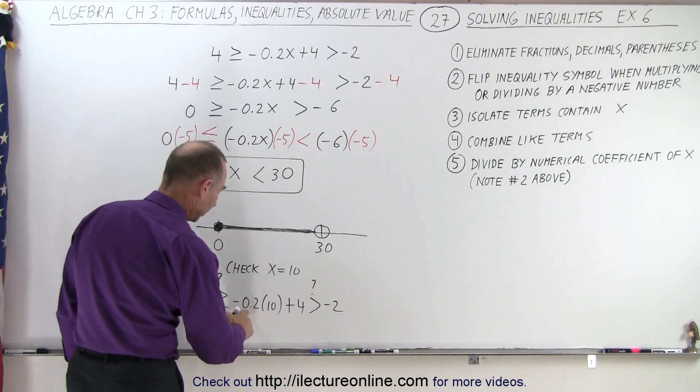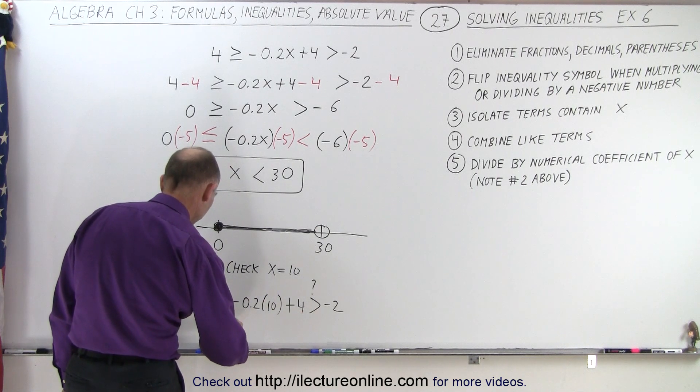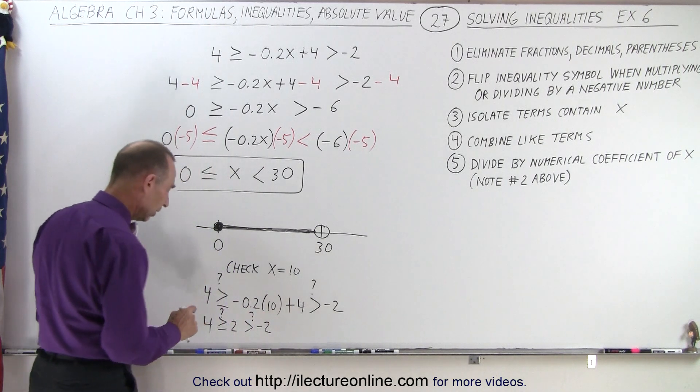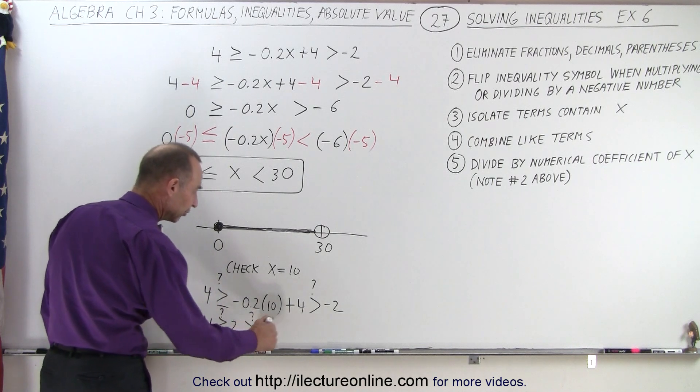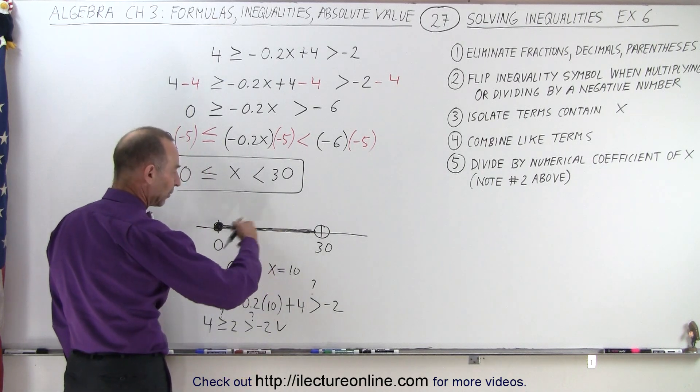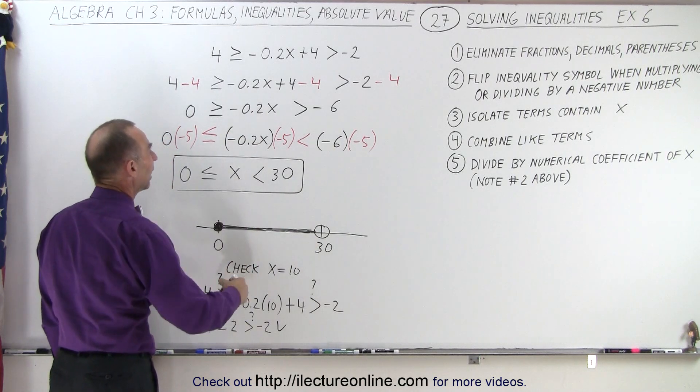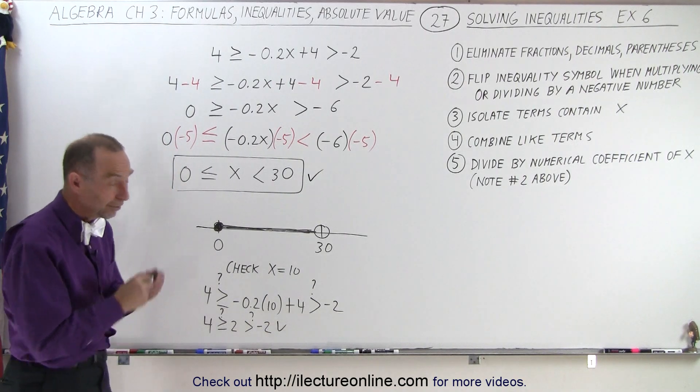Working this out, that would be negative 2 plus 4, that's positive 2. So is 4 greater than or equal to 2, which is greater than negative 2? And the answer is, sure enough, 2 is less than 4, and 2 is greater than negative 2. So that checks. I picked a random point from the range that satisfies the inequality, and it looks like we got the right range. And that is how it's done.